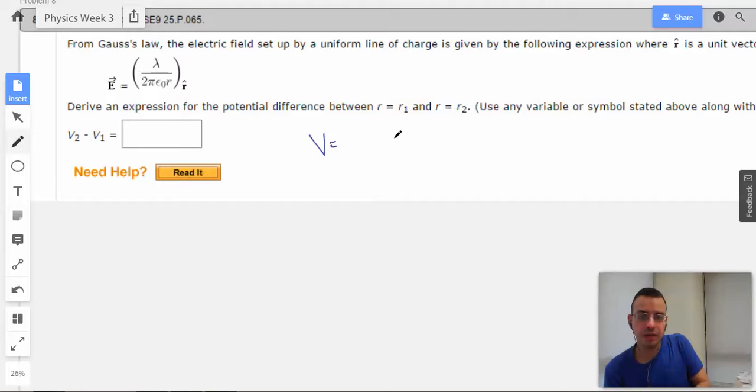So V equals negative integral E dot dr where we know that E in this case is lambda over 2 pi epsilon dot R in the R direction.